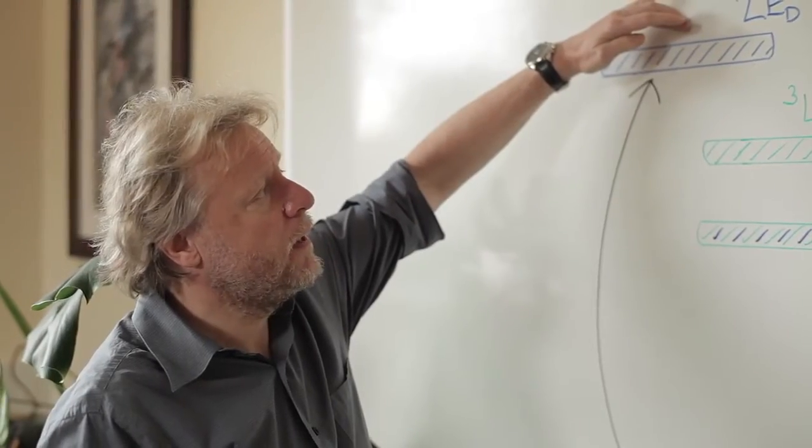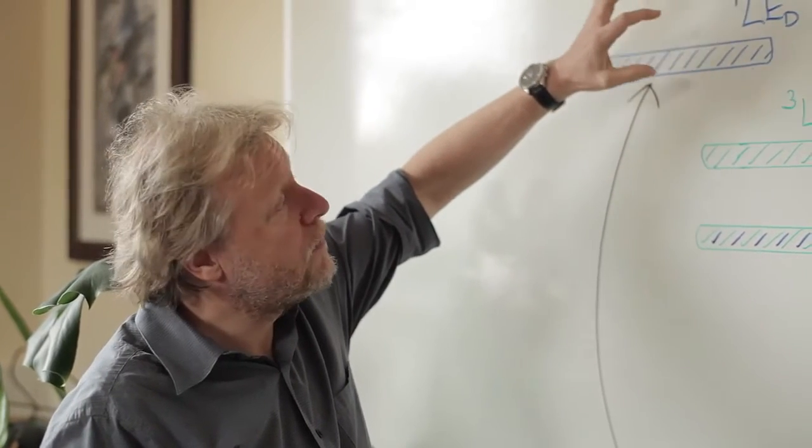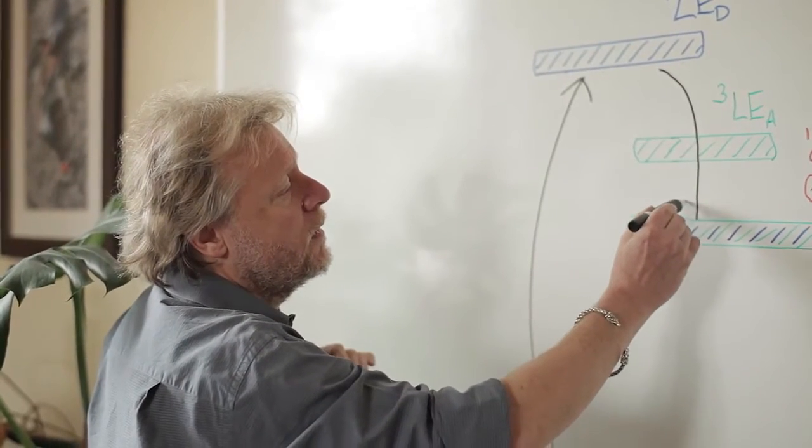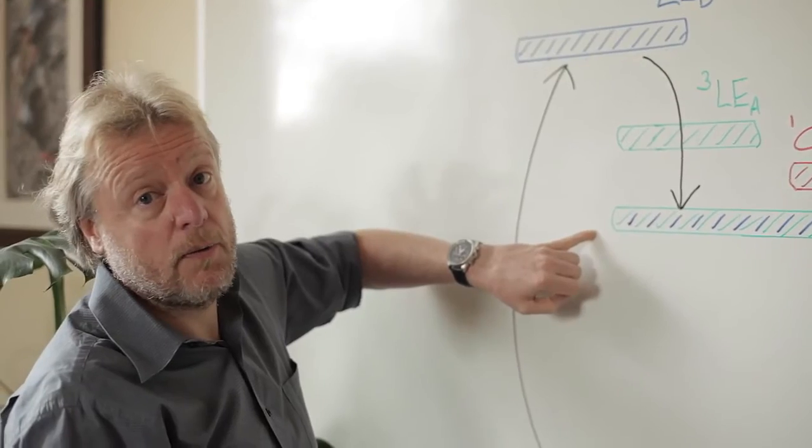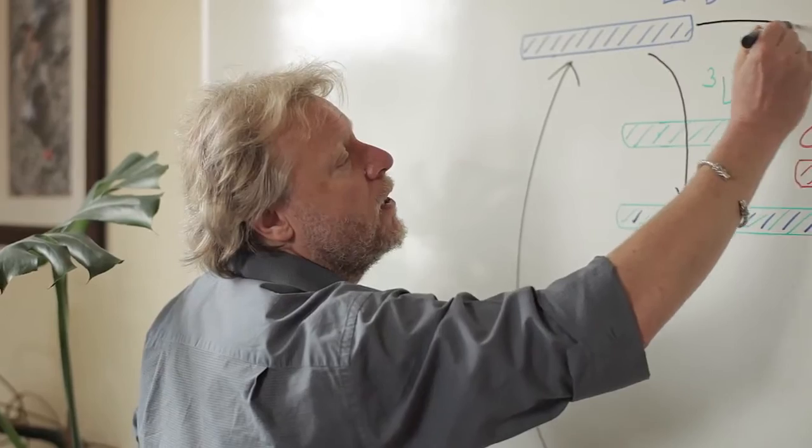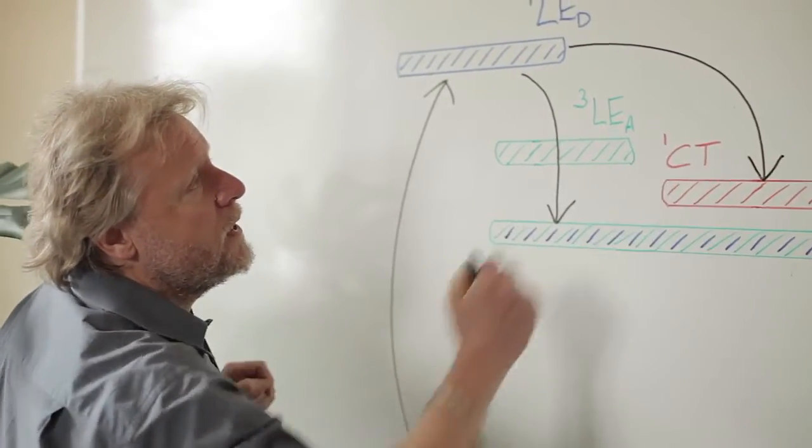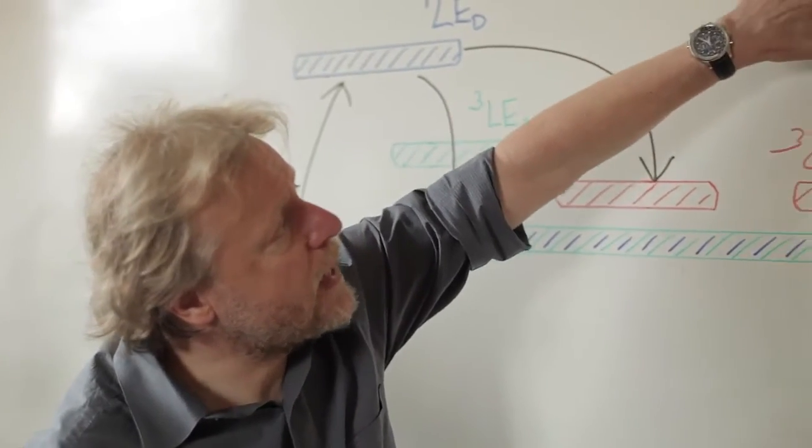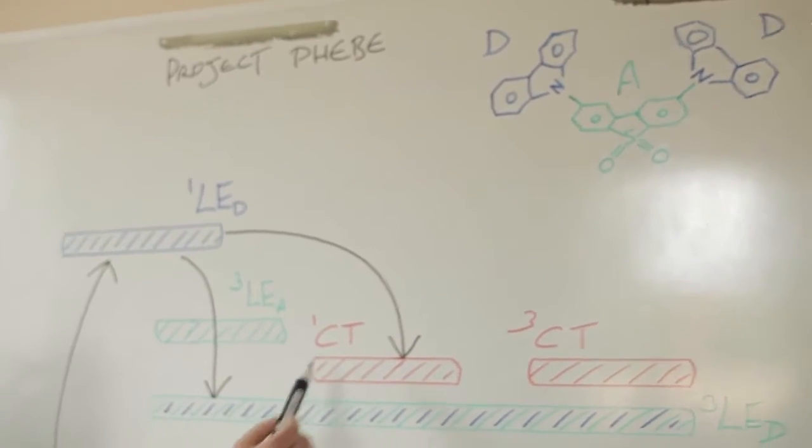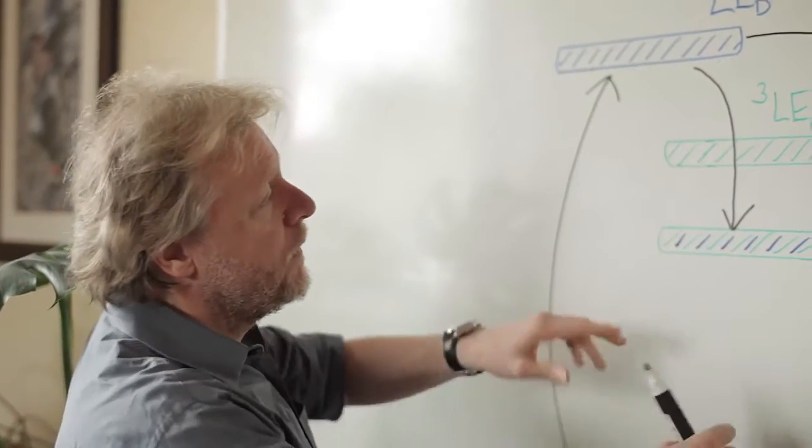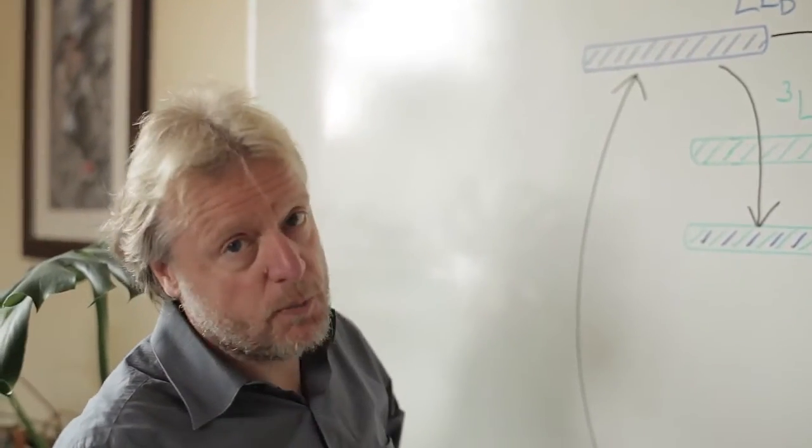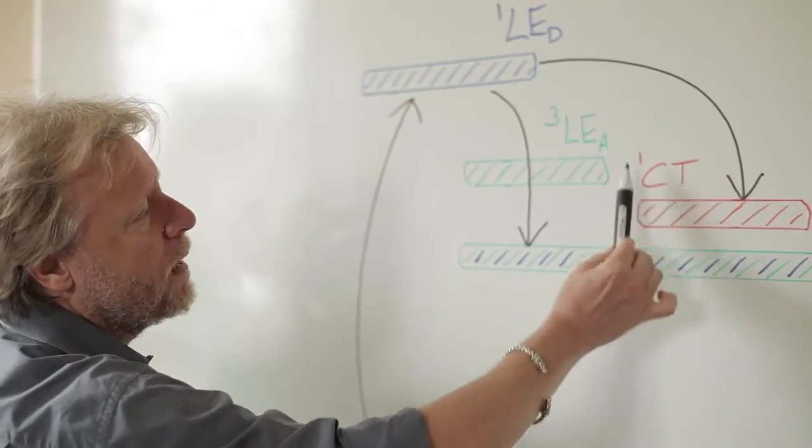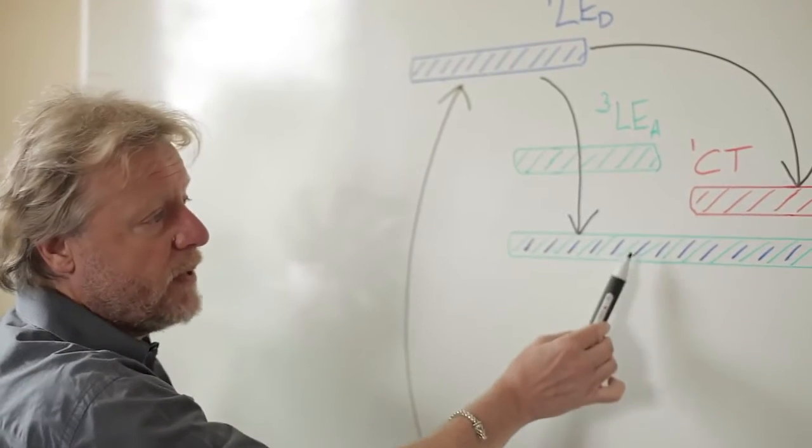The first excited state of the donor, several different processes can occur to this energy within the molecule. The singlet state of the donor can inter-system cross to become a triplet state on the donor. In competition with that, we can get charge transfer to form the CT state. That's the process where the electron is driven from the donor onto the acceptor to form this charge-separated CT state, and that's the important state for the TADF process. These two steps are in competition with each other, and we hopefully have a system where the molecule is very beneficial to this process and we form mostly charge transfer states.